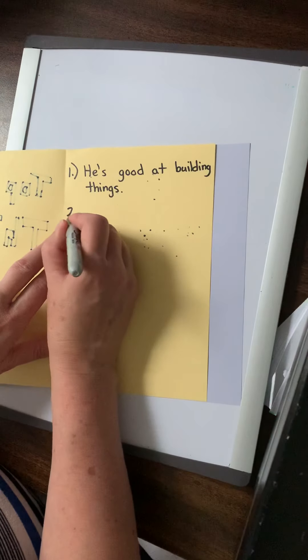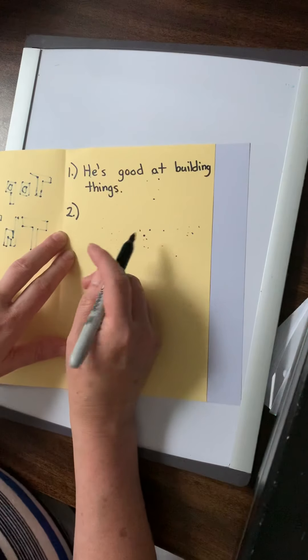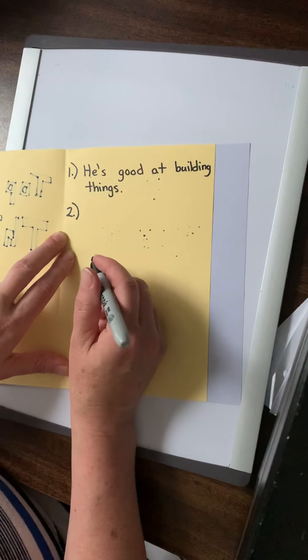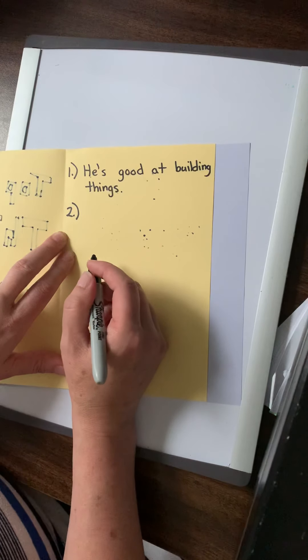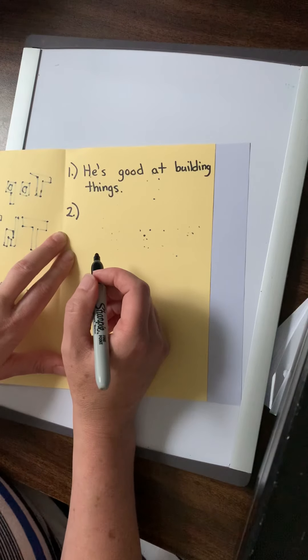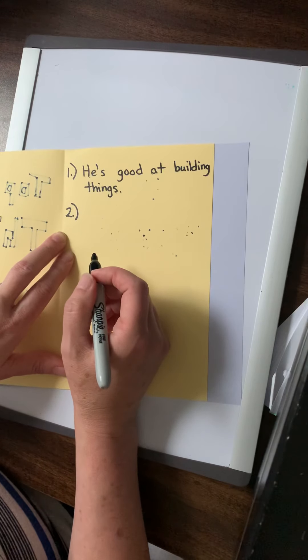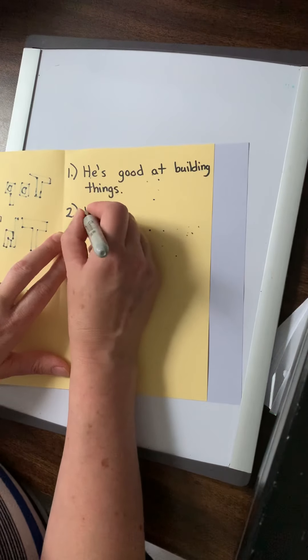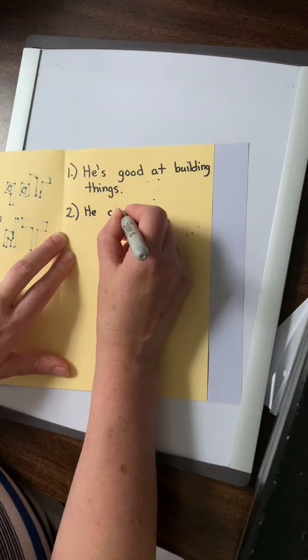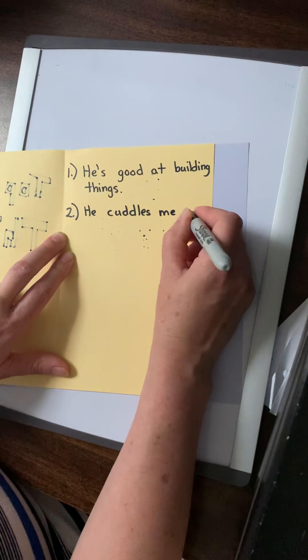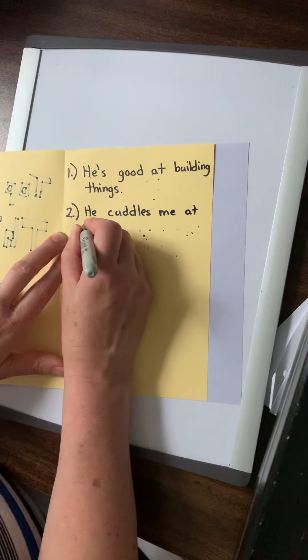So number one. Can you think of something else Tessa? What's something else great about your dad? I don't know about your dad. What's he good at? What's he great at? What do you love about him? Does he do anything for you? Does he cuddle you in bed before bedtime? He cuddles me before bed. Okay. He cuddles me at bedtime.